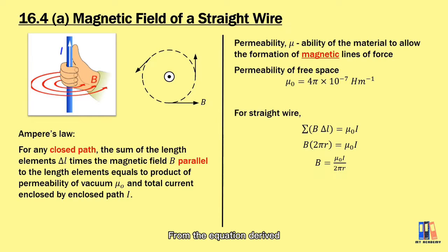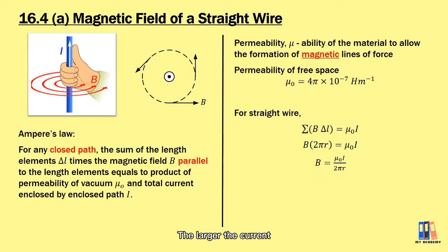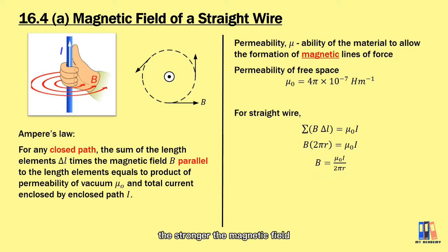From the equation derived, we can see that the magnetic flux density depends on the magnitude of the current and also the distance from the wire. The larger the current, or the nearer the distance to the wire, the stronger the magnetic field.